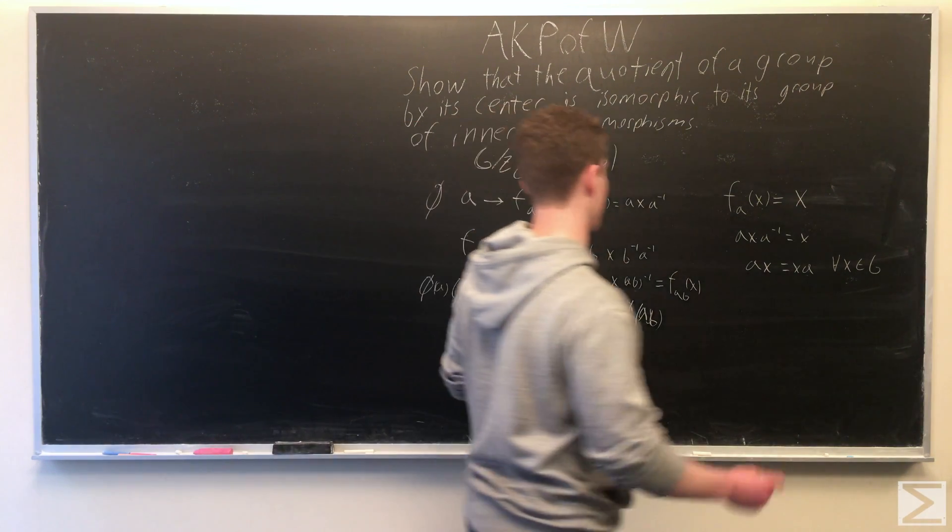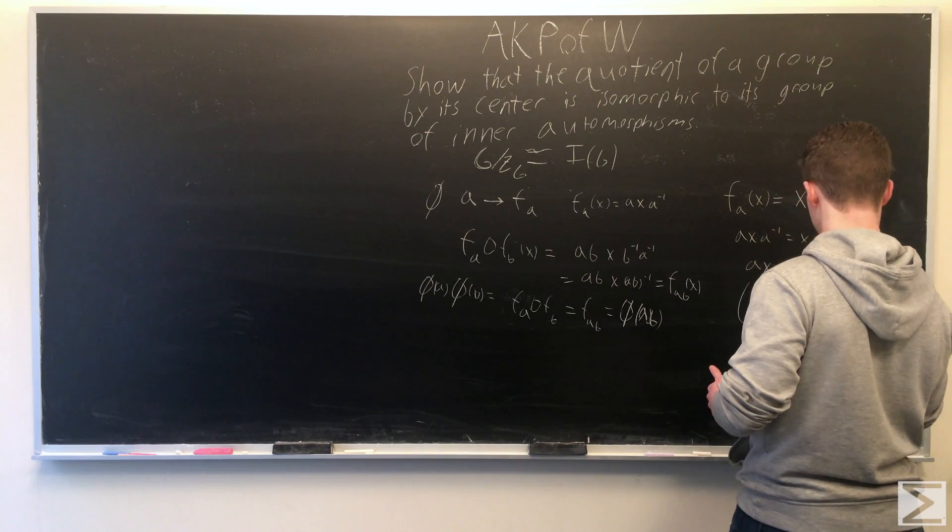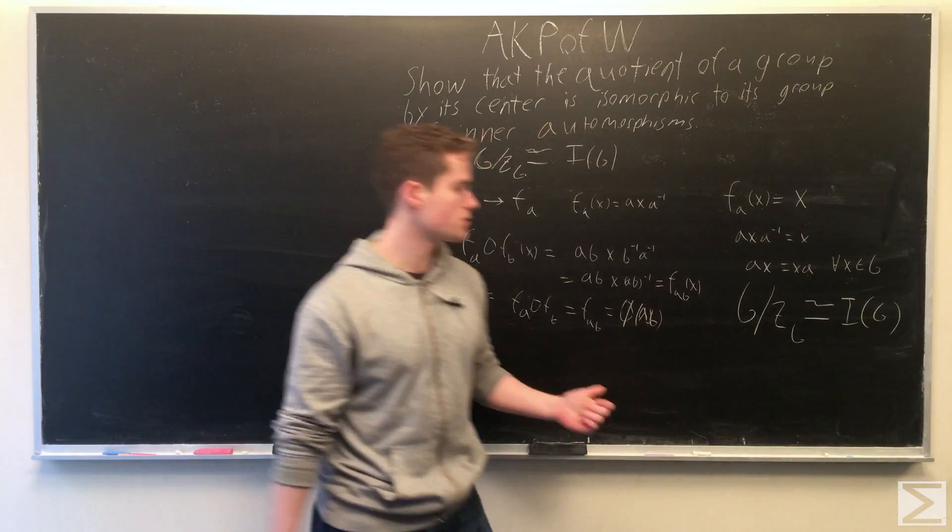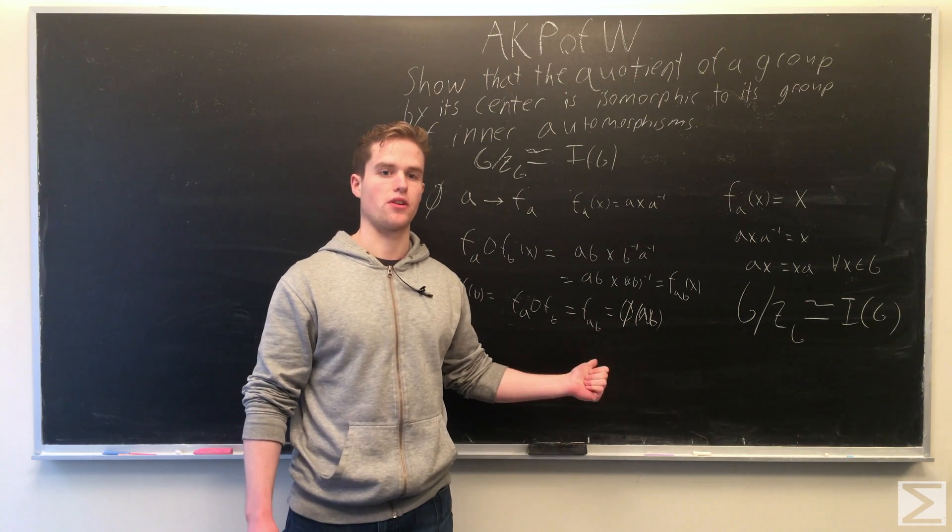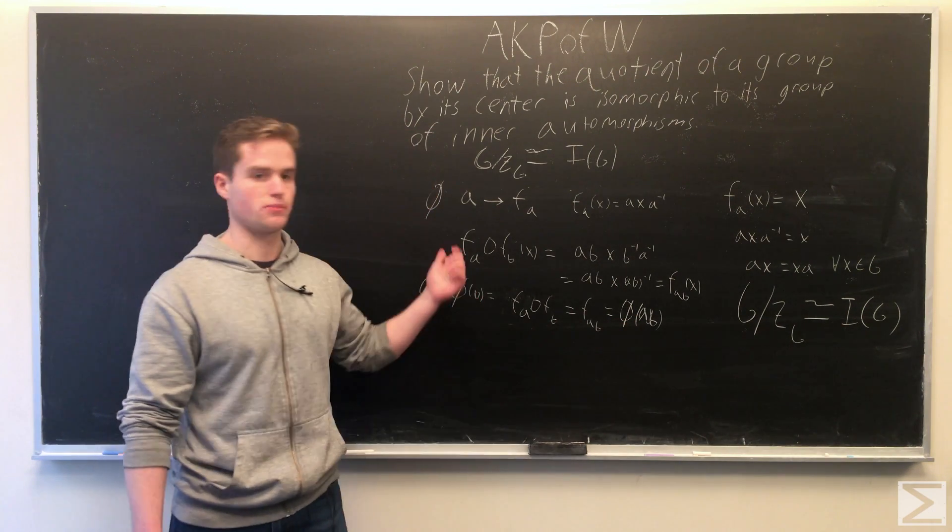Summing it all up, G quotient Z(G) is isomorphic to Inn(G), the group of inner automorphisms, as we've shown via this mapping we constructed. That solves our problem.